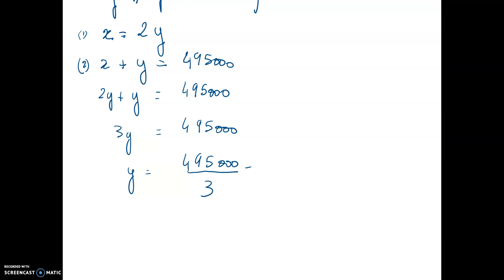So y equals 495,000 divided by 3. So that means the number of hits on day 2 is 165,000. And if I want to find the number of hits on day 1, it's going to be 2 times 165,000, which is going to be 330,000 hits.